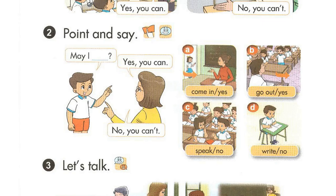Page 42, Lesson 2, Activity 2. Point and say. May I come in, Mr. Locke? Yes, you can. May I go out? No, you can't.